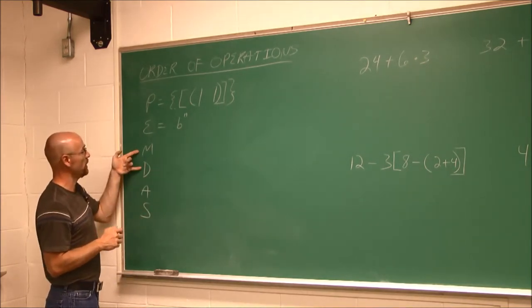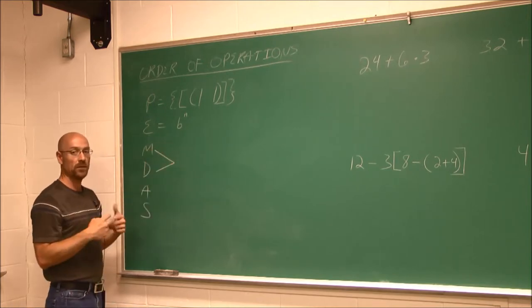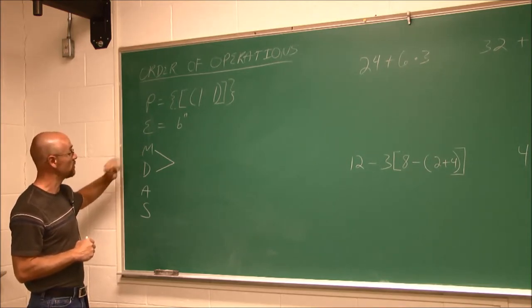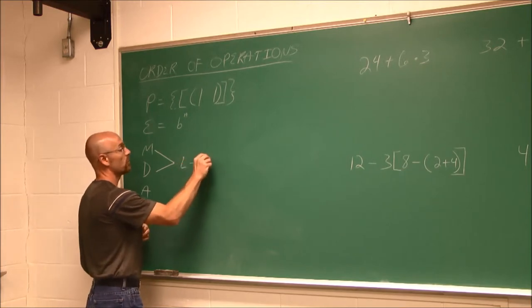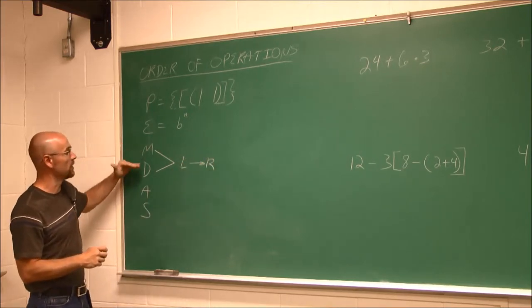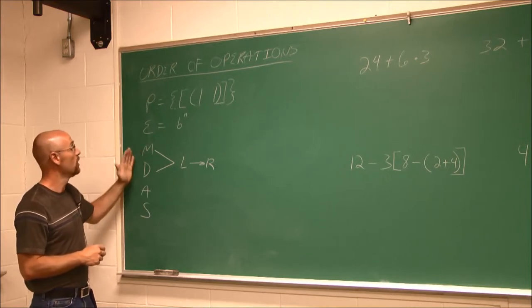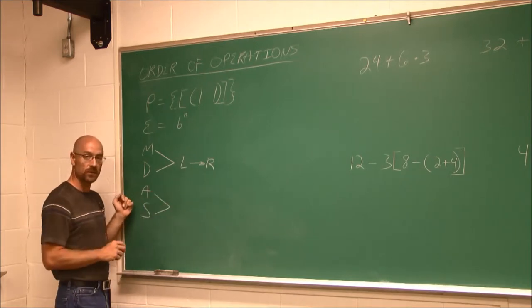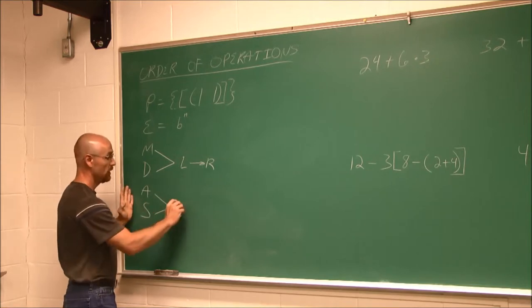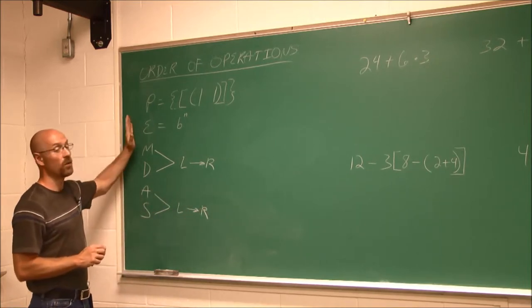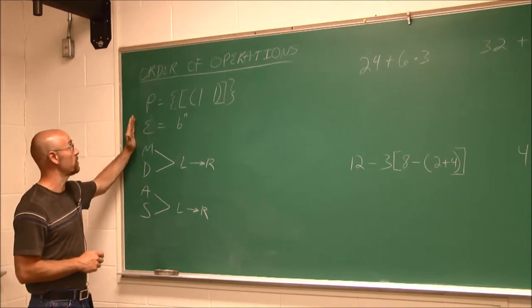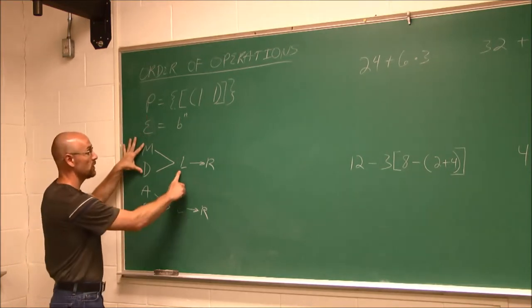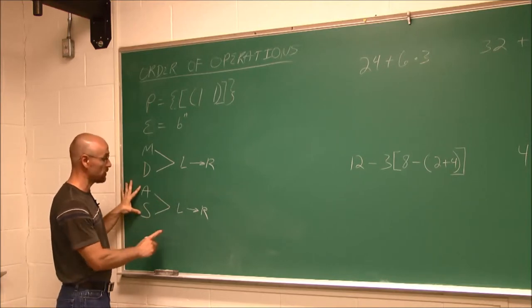Here's where it gets a little tricky: M and D stand for multiplication and division. They're actually the same operation — one builds values up, one breaks them down. We work them from left to right, just like reading a book. It doesn't matter that M comes before D; we do them left to right. Similarly, A and S — addition and subtraction — are the same operation worked from left to right. This is how we approach any expression in mathematics.